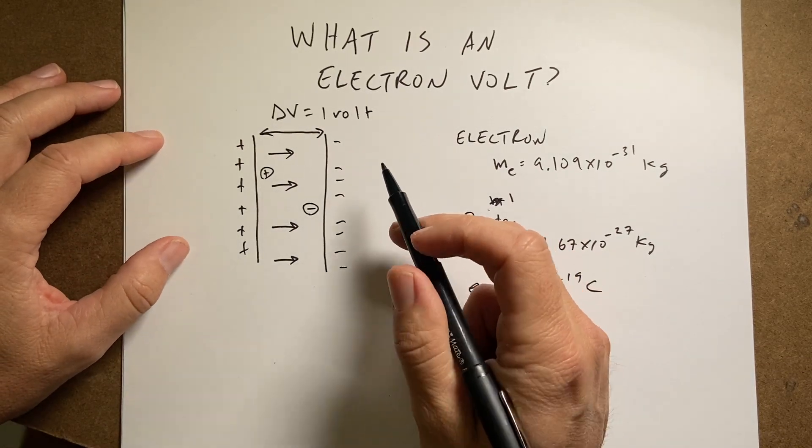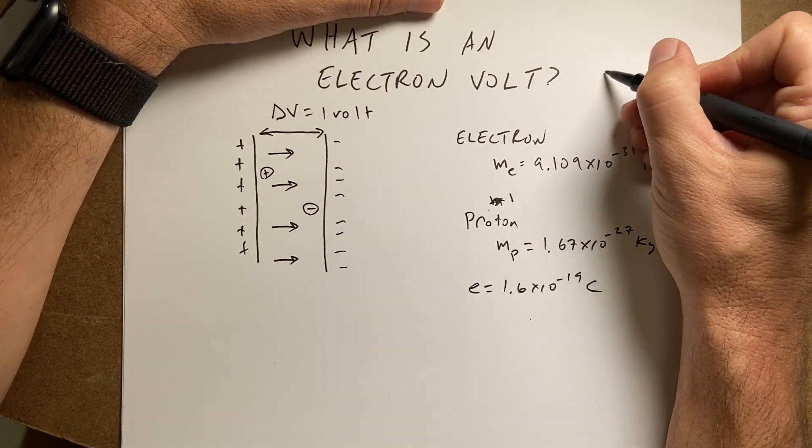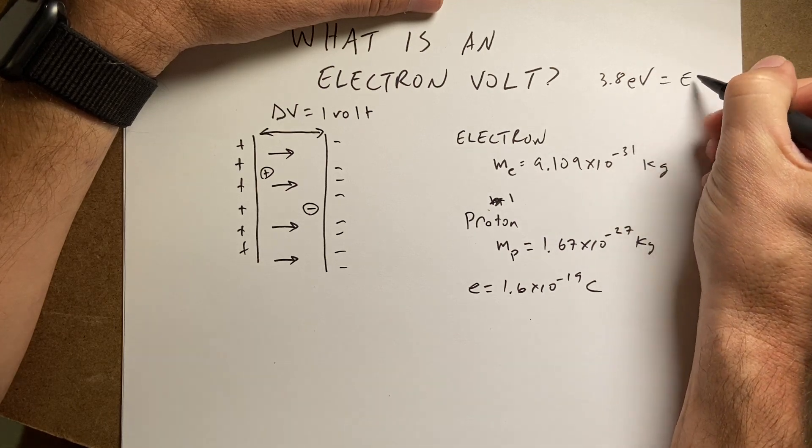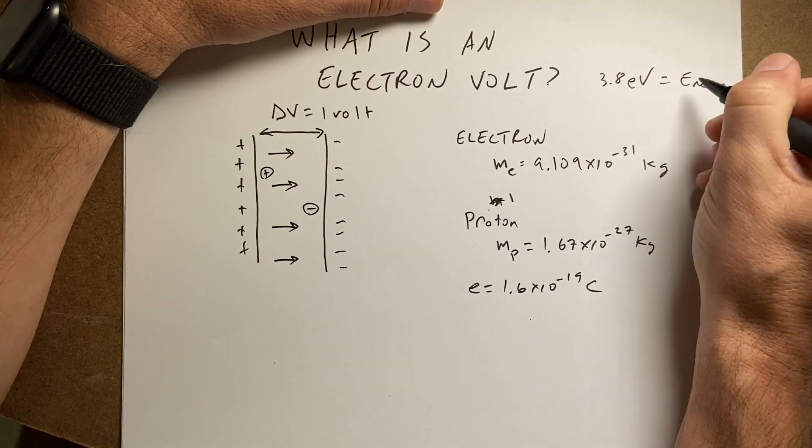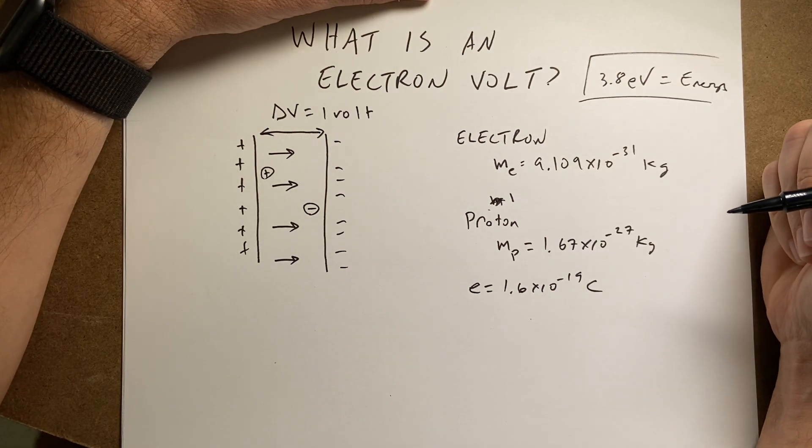What is an electron volt? So you'll see this, you'll say something like oh that thing has you know 3.8 eV of energy. The eV is an electron volt. So what does that even mean?